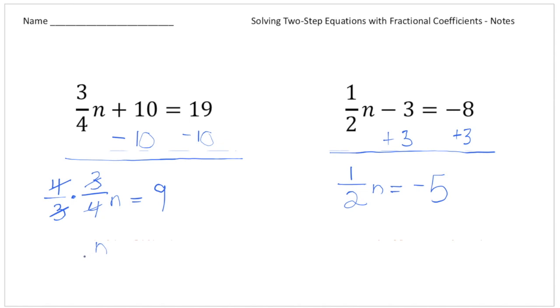But remember, what you do to one side, you got to do to the other side. So I'm going to multiply 9 times 4 thirds. And really, this is 9 over 1. And I can cross-reduce.